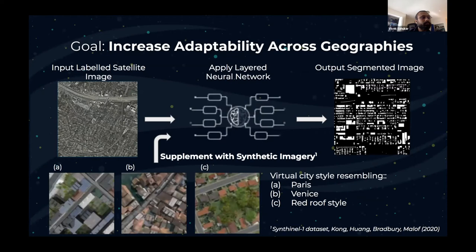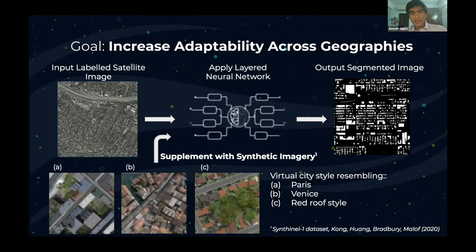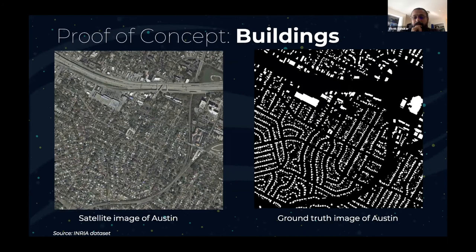Our goal is to increase adaptability over geographies. We want to supplement our original satellite images with synthetic examples, introducing an element of randomness and increasing the diversity of our training data. We see three synthetic images representing styles from, for example, Paris or Venice, and a generic red roof style. We want to input these along with authentic satellite images into our neural network. As a proof of concept, our work focused on datasets with annotated buildings, since we already had access to properly annotated building data to run our experiments on.